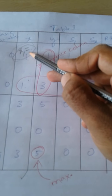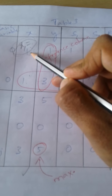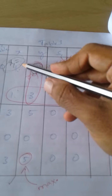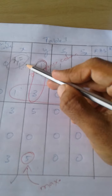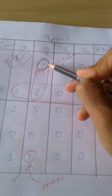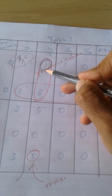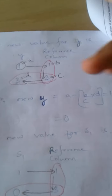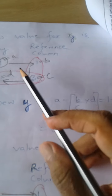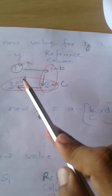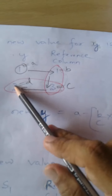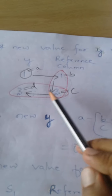Once this value is determined, instead of 1 you write 2 by 3 in the next table. Next we calculate the new value for y. The y column is 1 by 3 and the reference column is also 1 by 3, considering values a, b, c, and d. Always remember that b, c, and d will be inside the reference row and reference column — these values are always within the reference.